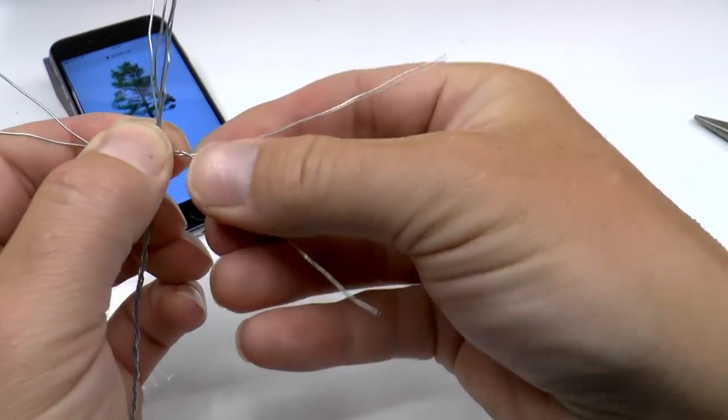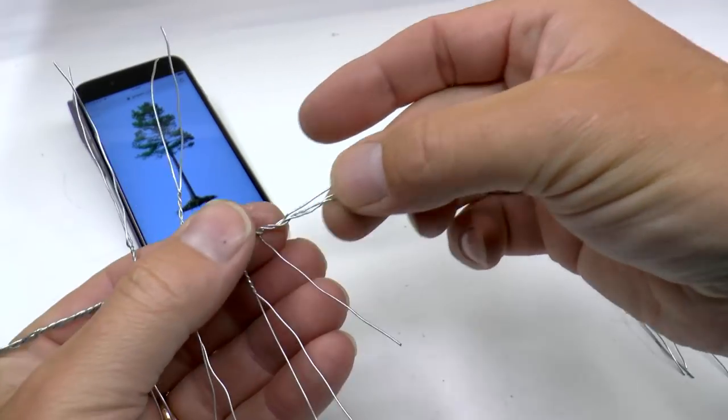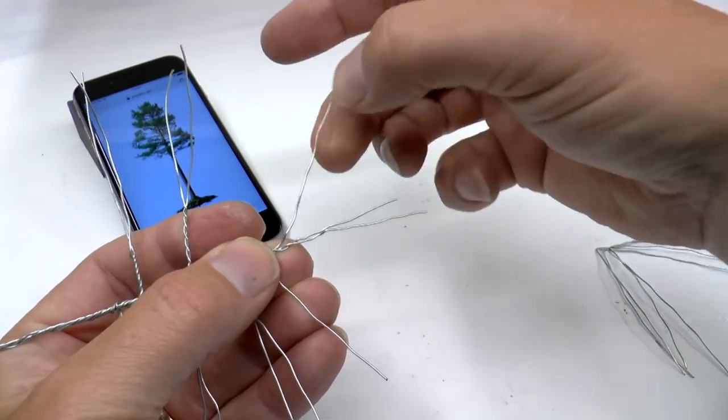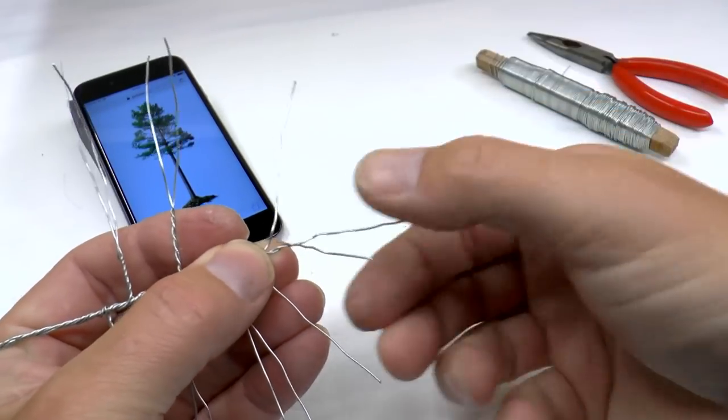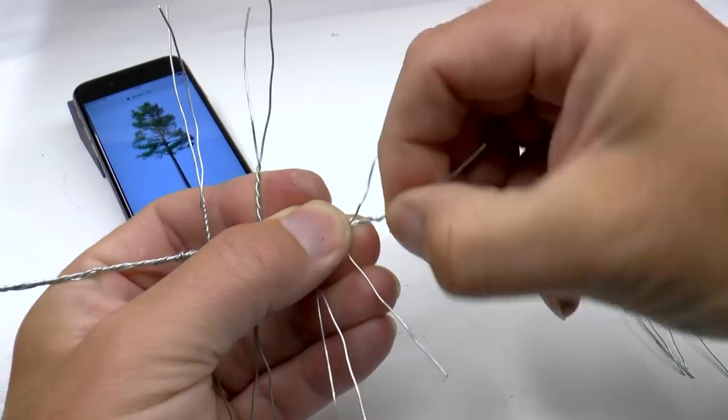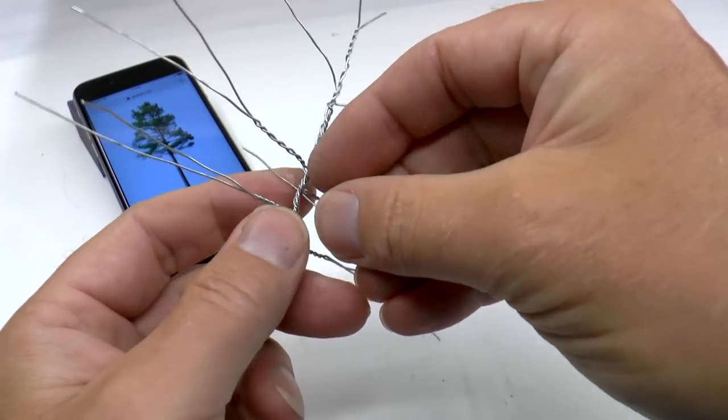Then I continue in the same manner for each branch. I take a new piece of steel wire, bend it and add it to the trunk. On two thirds I make a single wire branch leaving now only three wires for the trunk. I make the same just below the top so I leave only two wires for the top.